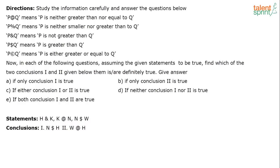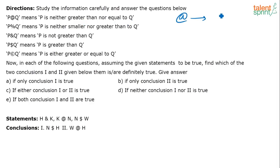Whenever such questions come, generally there will be three or four questions that accompany a set. So what I would suggest is write down what each symbol represents — once you write that down, it will be useful throughout the problem. In this question, what does '@' represent? '@' represents 'P is neither greater nor equal to Q,' which means '@' represents less than. P is less than Q — that's what '@' represents.